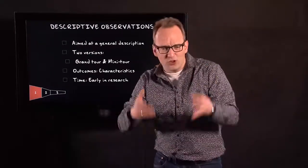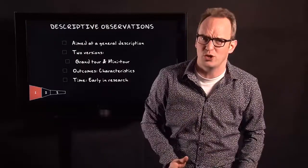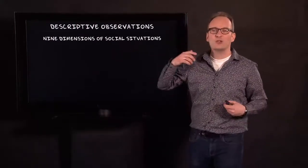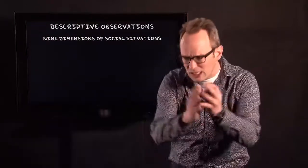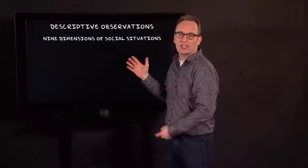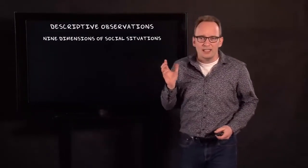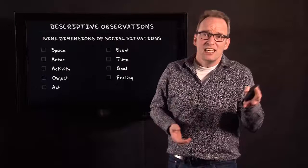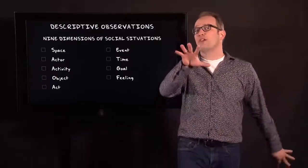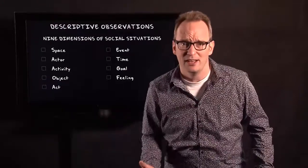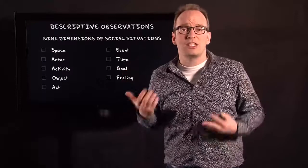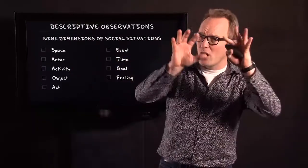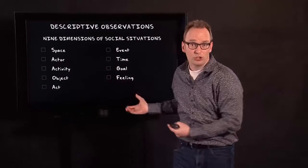You do this in order to create some broad characteristics early on in your research. Spradley suggests that you can use nine different dimensions of social situations to describe them. These dimensions are: space, actor, activity, object, act, event, time, goal, and feeling. If you only use five of those nine dimensions, that's perfectly fine. And if you come up with additional dimensions and end up with fifteen, that's fine too — because you start broadly and look at different aspects of a social situation.